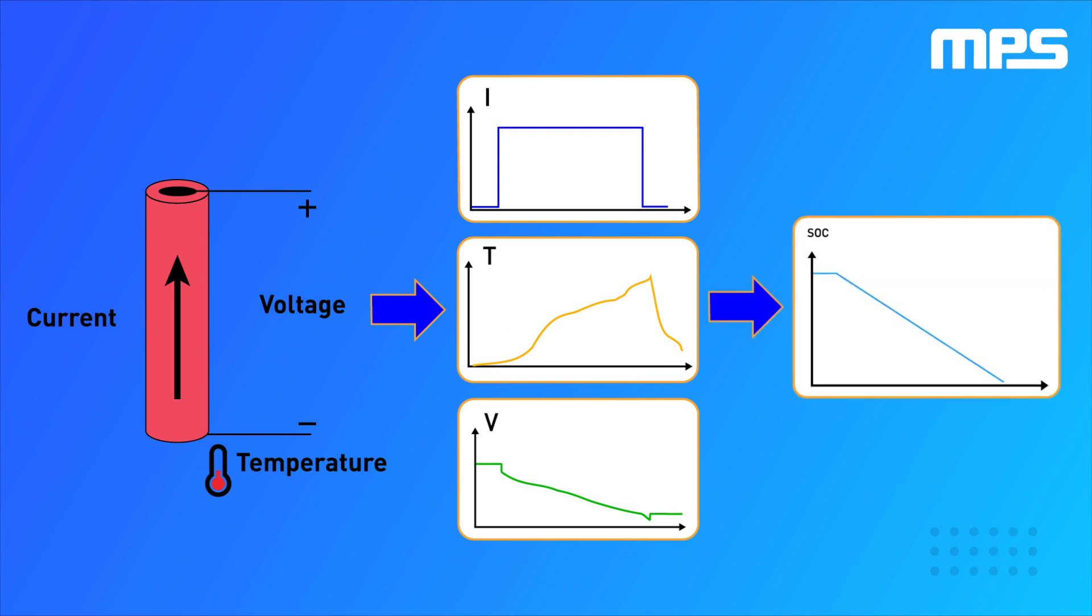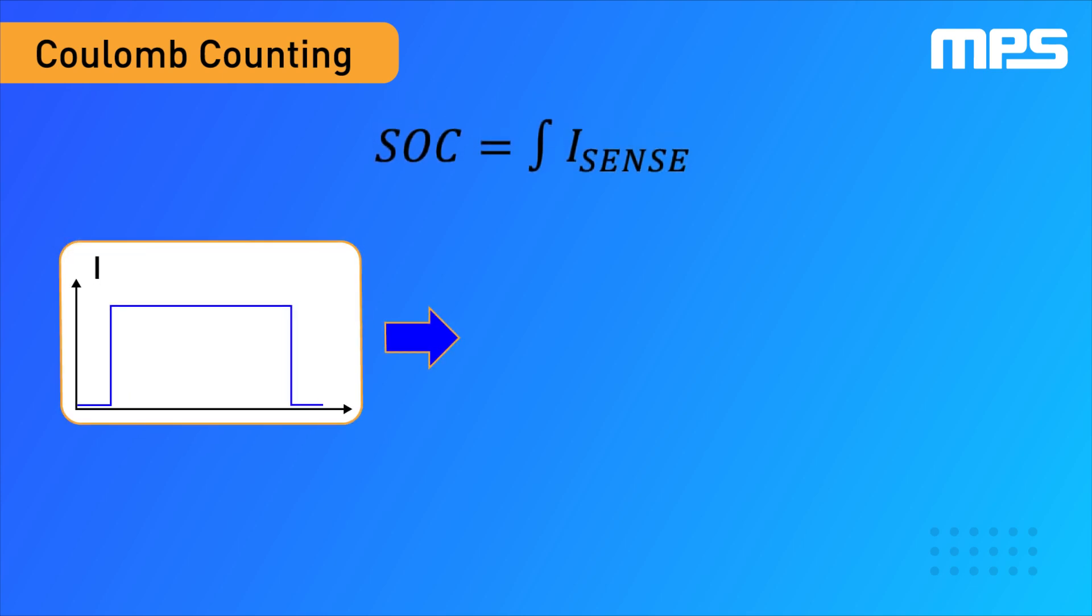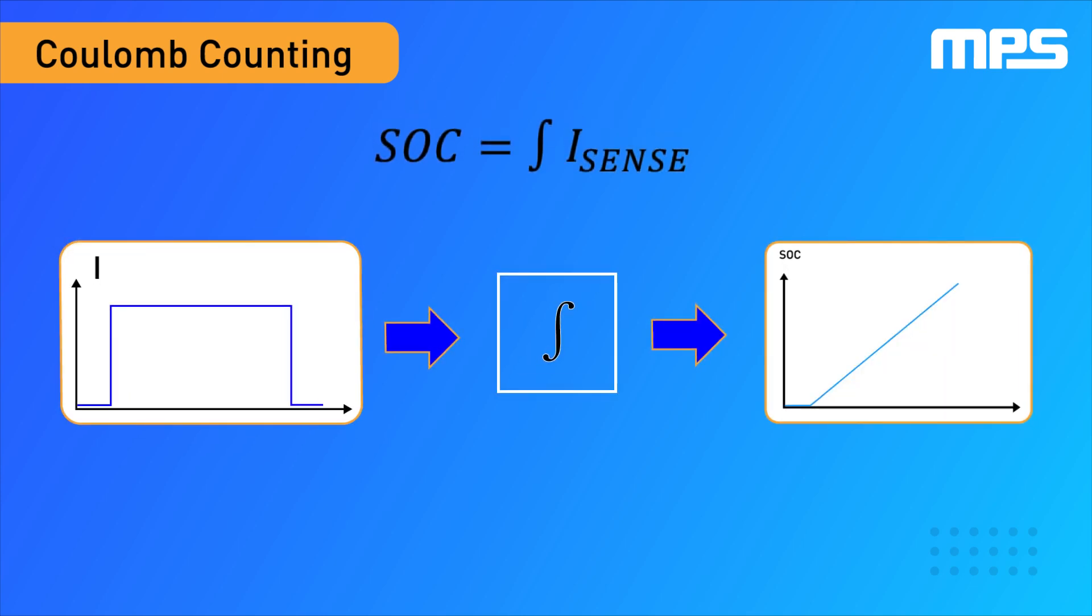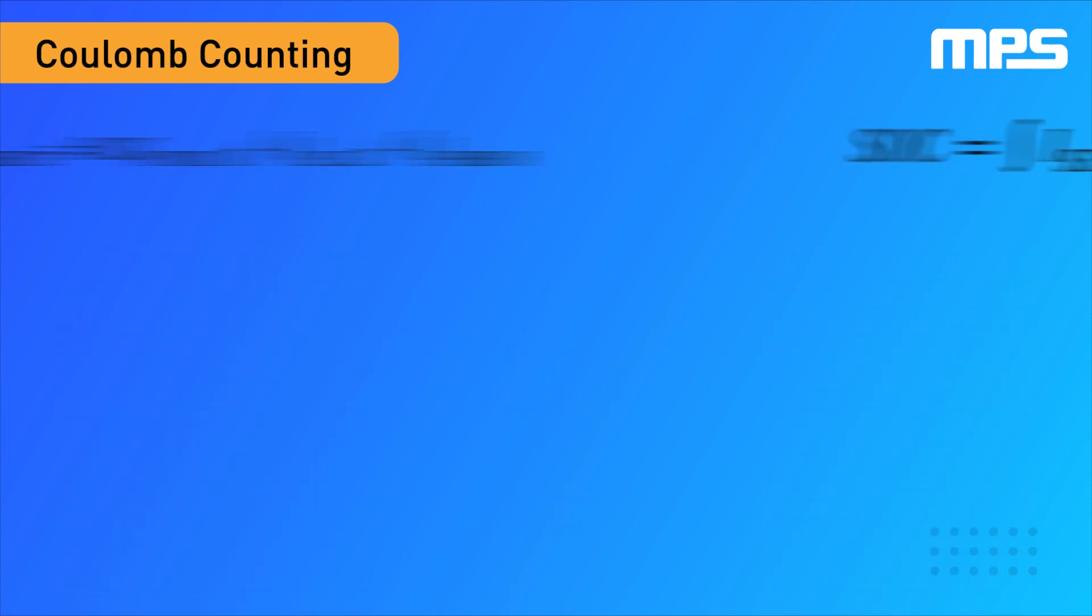The simplest method of estimating SOC is Coulomb counting. This method can estimate the charge stored in the battery by integrating the current flowing to and from the battery. There are two main problems with this method.